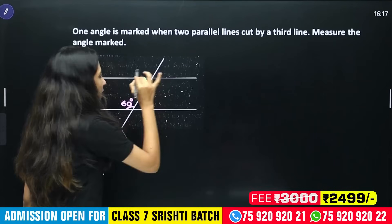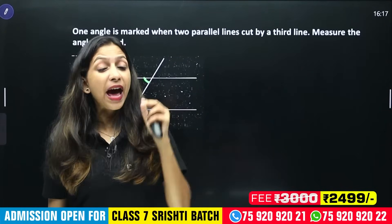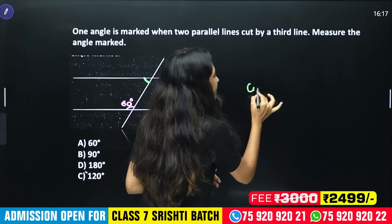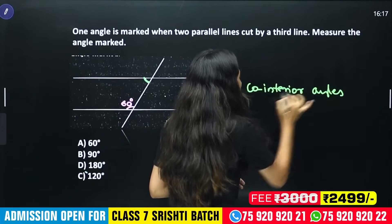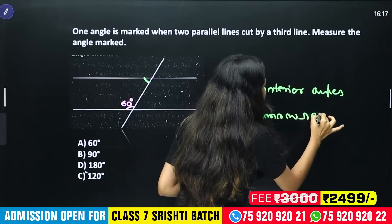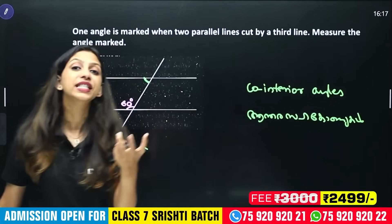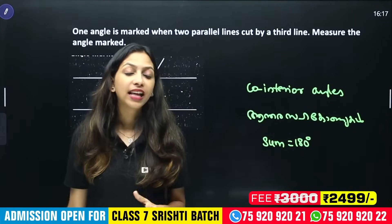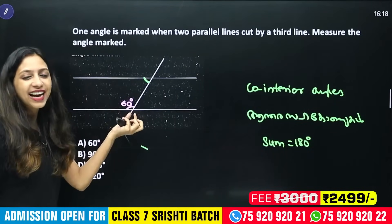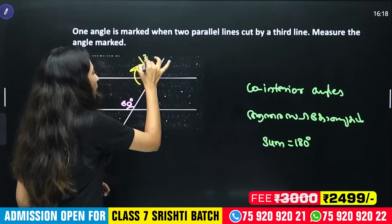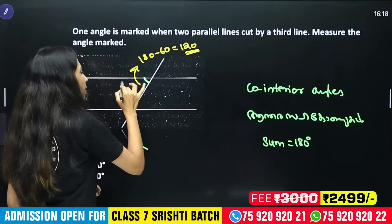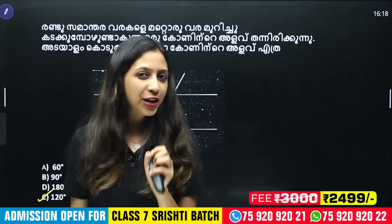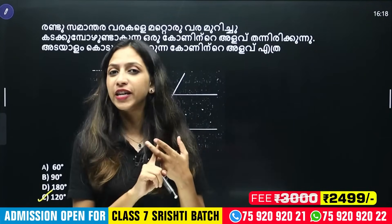There is one angle equal to another angle between two parallel lines. These are called co-interior angles. Co-interior angles sum to 180 degrees. For example, if one angle is 60 degrees, the co-interior angle is 180 minus 60, which equals 120 degrees. Corresponding angles or alternate angles are equal, but co-interior angles sum to 180.